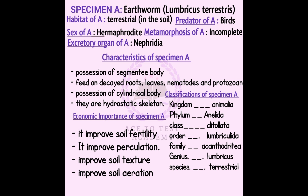The taxonomy of specimen A: the kingdom is Animalia, the phylum is Annelida, the class is Clitellata, the order is Haplotaxida, the family is Megadrile, the genus is Lumbricus, and the species is terrestris. The economic importance of S1 includes soil fertility, soil circulation, and soil texture improvement.